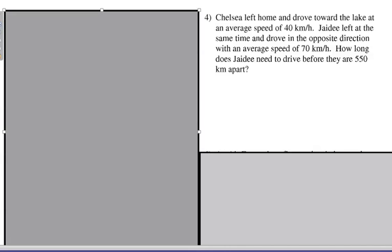Let's try number four to finish the video. Chelsea left home and drove toward the lake at an average speed of 40 kilometers per hour. JD left at the same time and drove in the opposite direction at an average speed of 70 kilometers per hour. How long does JD need to drive before they are 550 kilometers apart? Good luck — pause and come on back.